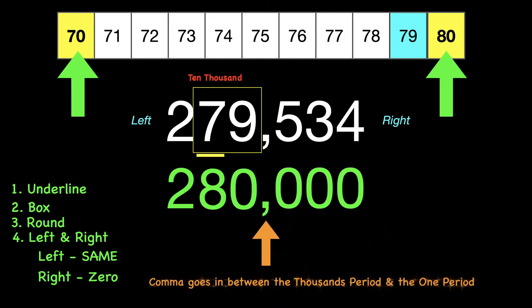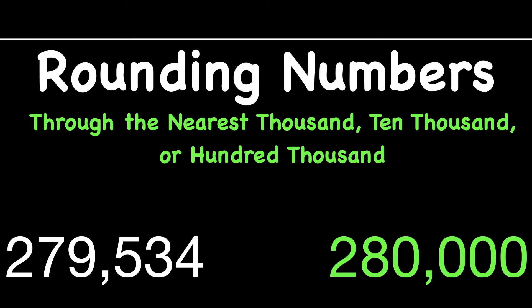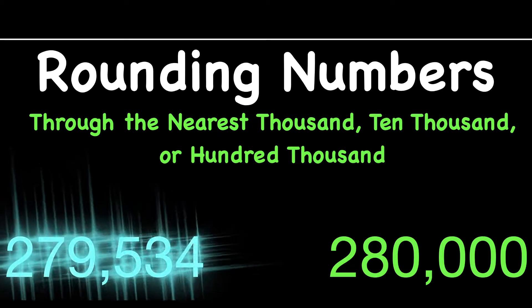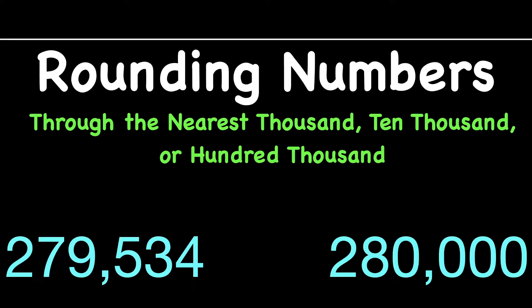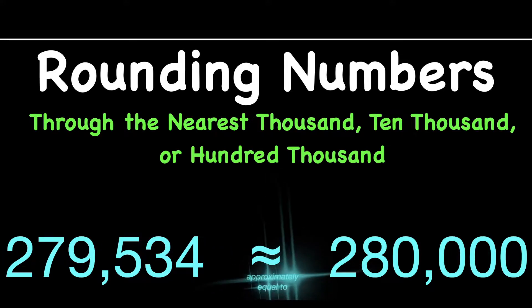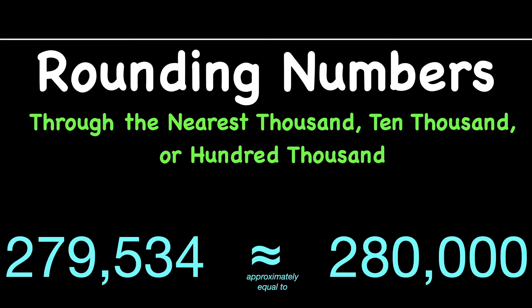Don't forget your comma has to go in between your thousands and your ones period. So this problem would read two hundred seventy-nine thousand five hundred thirty-four rounded to the nearest ten thousand equals two hundred eighty thousand. There's also a symbol you can use — it doesn't really mean rounded, it just means about, close to, or approximately equal to. You'll see that sometimes.